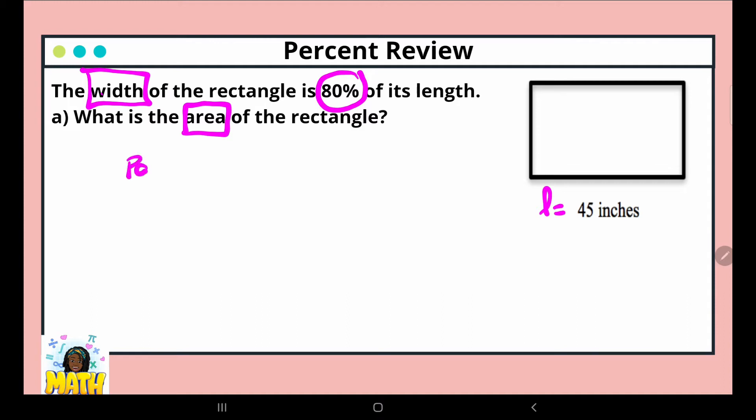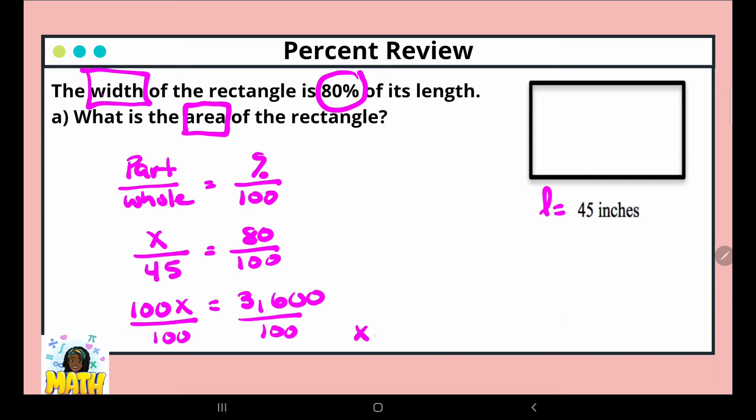So for our percent proportion, we have part over whole equals percent over 100. In this scenario, we have x as our part, 45 as our whole, 80 as our percent over 100. Now we're going to cross multiply, so x times 100 gives us 100x. 45 times 80 is equal to 3,600. We're dividing both sides by 100, where x is equal to 36.